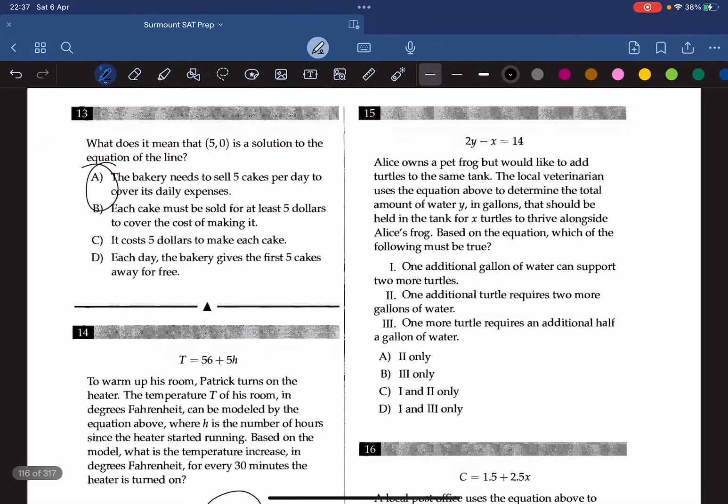Alice owns a pet frog but would like to add turtles to the same tank. The local veterinarian uses the equation above to determine the total amount of water y in gallons that should be held in the tank for x turtles to thrive alongside Alice's frog. Based on the equation, which of the following must be true? Number one: one additional gallon of water can support two more turtles. Two: one additional turtle requires two more gallons of water. And three: one more turtle requires an additional half a gallon of water. What we can do here is rewrite the equation into the slope intercept form, which is y equals mx plus b. By doing that, we get y equals 1 over 2x plus 7.